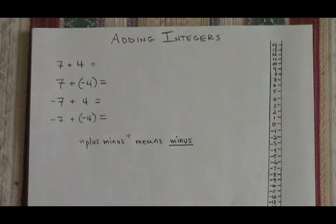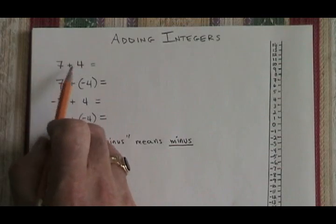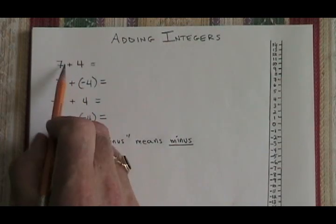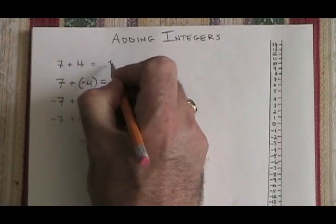In our high school integers course, we have to learn how to add integers. Adding two positive integers is the same as what we already know. We know that 7 plus 4 equals 11.